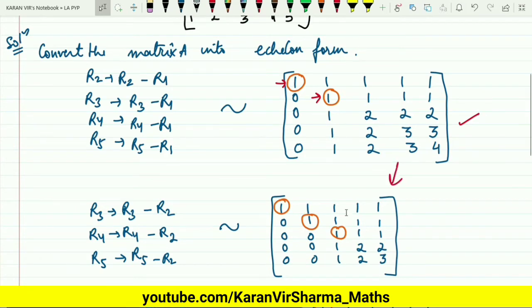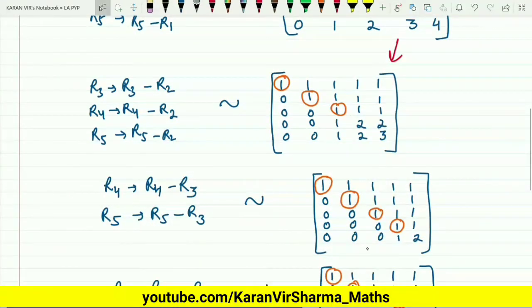Now this was the first pivot position, below it all zeros. Second pivot position, below it all zeros. Now for the third pivot position, below this we need to make zeros. What will we do? Similar process.